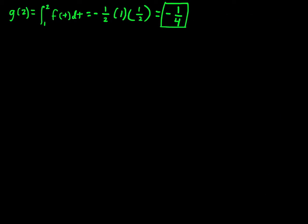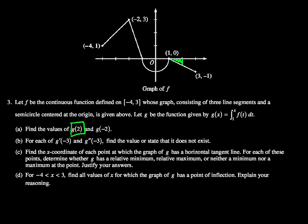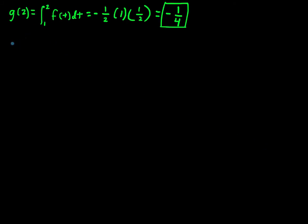Okay, going back to our problem, we also need to find g of negative 2. Now it's a little bit harder because we still have g of negative 2 being equal to this integral from 1 to negative 2 of f of t dt. And the first thing I notice here is that 1 is greater than negative 2, so our limits are out of order for our normal areas.